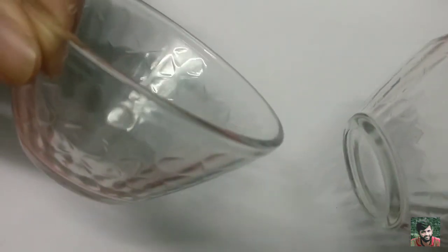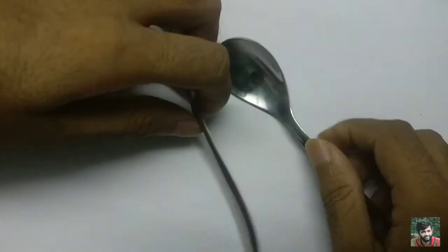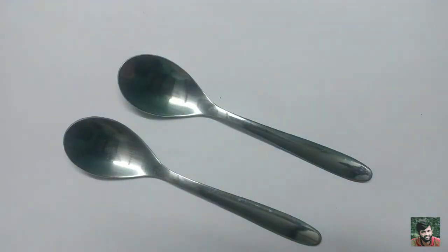They are similar. Now let us take another example. Take a look at these two spoons that I have. Would you call them similar or would you call them congruent? And your answer would be probably that they are congruent because the material is same.